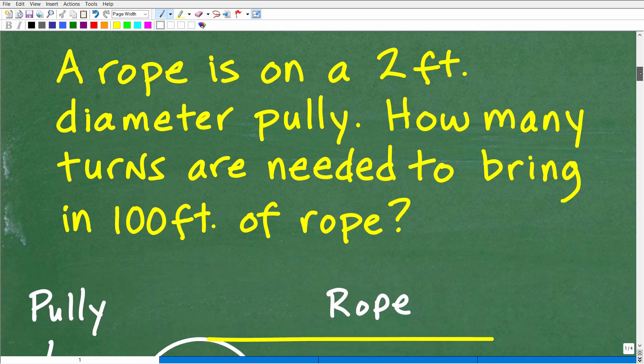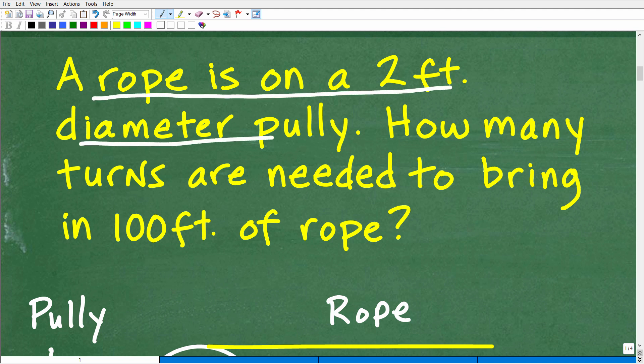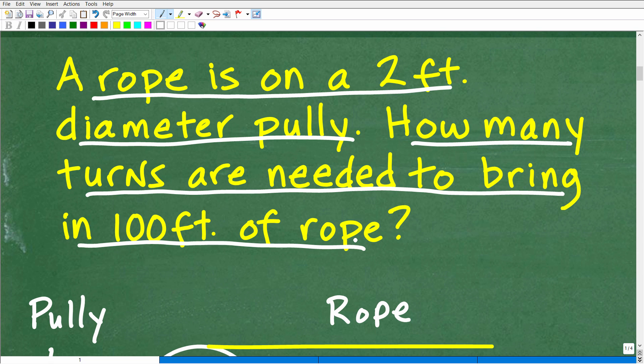All right, so here is the problem. And anytime you're reading or trying to solve any math word problem, whether it be an algebra word problem, it doesn't make a difference. You want to read the problem one time and then reread it a couple more times so you really understand what's going on. Again, we have this rope that's attached onto this two-foot diameter pulley. So we're looking for how many turns are needed to bring in this 100 feet of rope back onto the pulley.